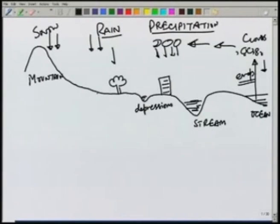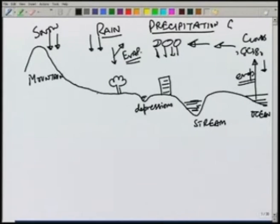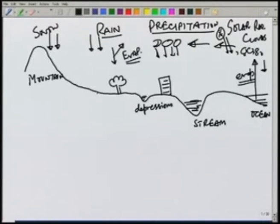Once the precipitation occurs, part of it will directly evaporate. Solar radiation is the source of heat energy. The solar radiation in the form of heat energy from the sun will cause the evaporation. The same energy will also cause some evaporation from the rainfall directly, so this rain will not reach the ground. Even before that, there will be some evaporation from the rain.